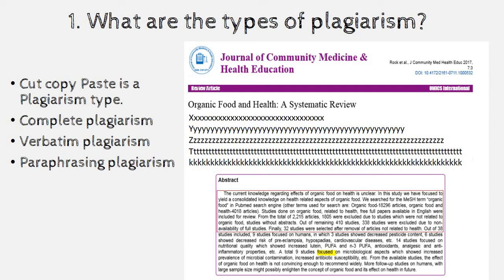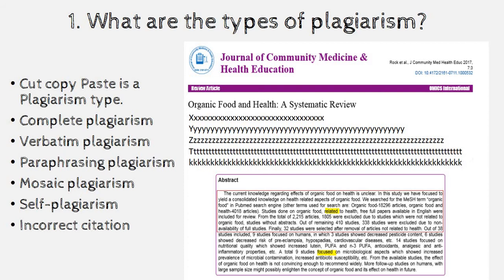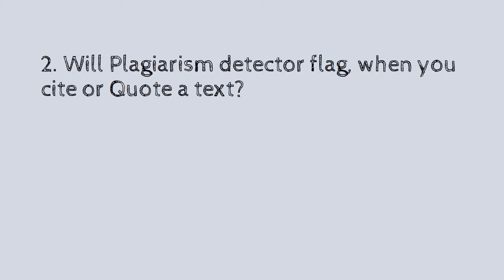Paraphrasing plagiarism is when you change words here and there using a dictionary but don't cite the source. We also have mosaic plagiarism, self-plagiarism — which is taking your own article and submitting it to a different journal — and incorrect citation, where you don't cite properly. These are the common types of plagiarism, but the basis is the same: you are using somebody's ideas, thoughts, content, or language without citing the reference.